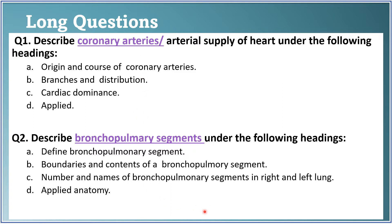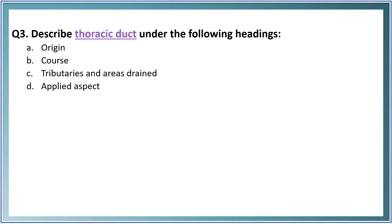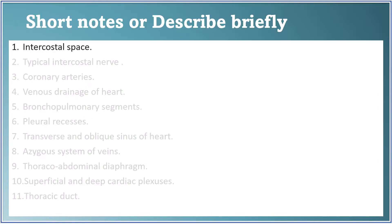The third long question is: describe the thoracic duct. Cover its origin from the cisterna chyli in the abdomen, its course — how it passes through the diaphragm, its course in the thorax (first on the right side, then crossing to the left side and ending in the neck), its tributaries, the areas of the body drained, and applied anatomy — chylothorax, what happens if the thoracic duct is injured.